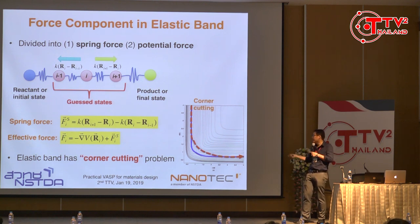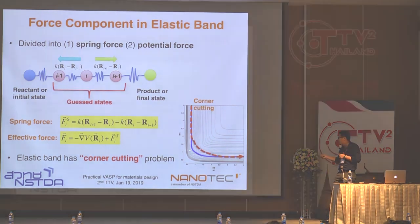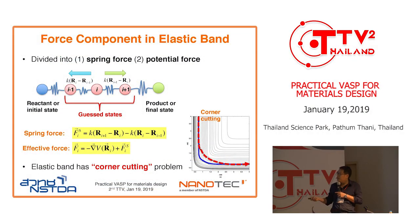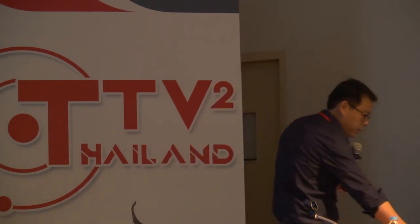This looks like a good idea to find the path from A to B, but there's one problem. If you imagine a curved potential field where the reactant goes along a corner to the product, introducing the spring force modifies the actual states and can cause so-called corner cutting. Instead of following the true minimum energy path shown as the blue line, the spring force can push you onto the wrong state — this is an artifact of the elastic band method.